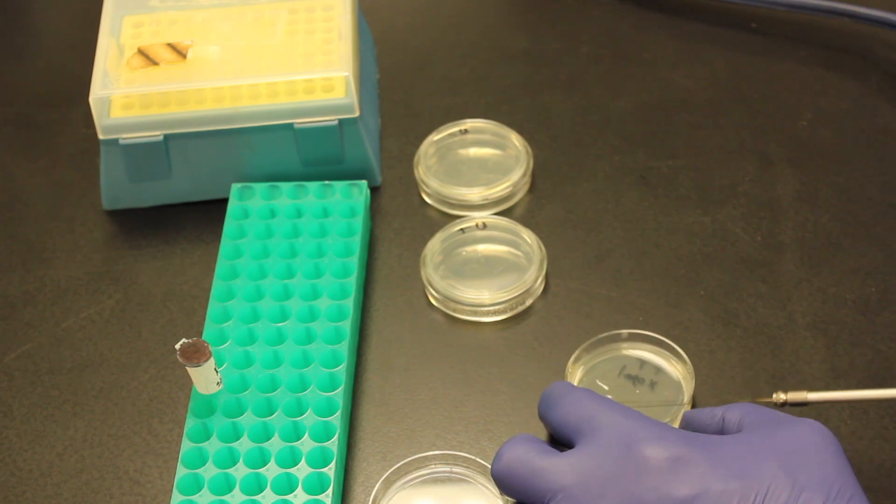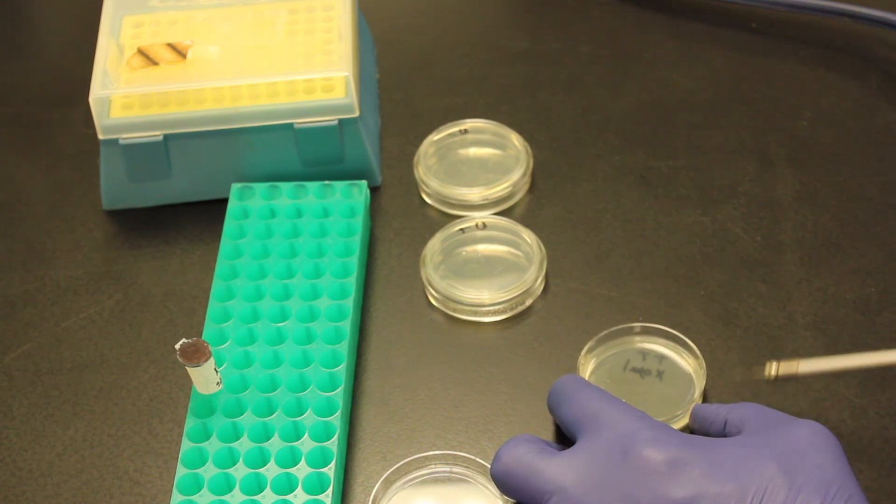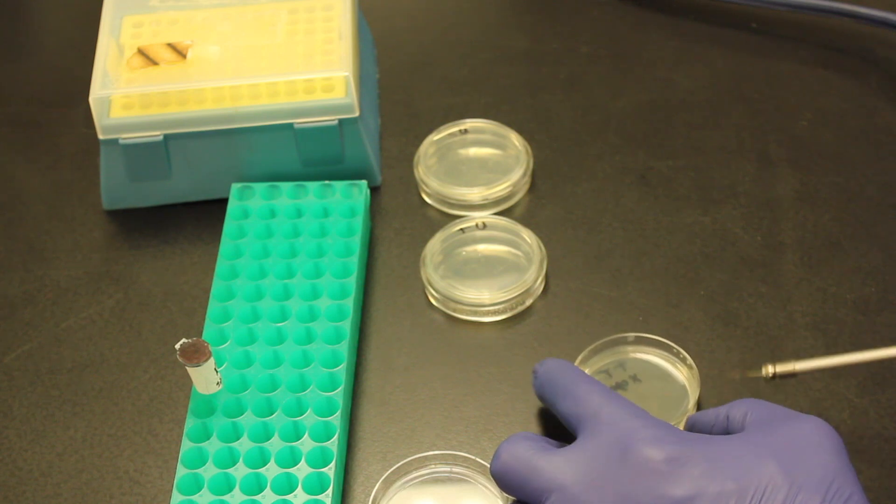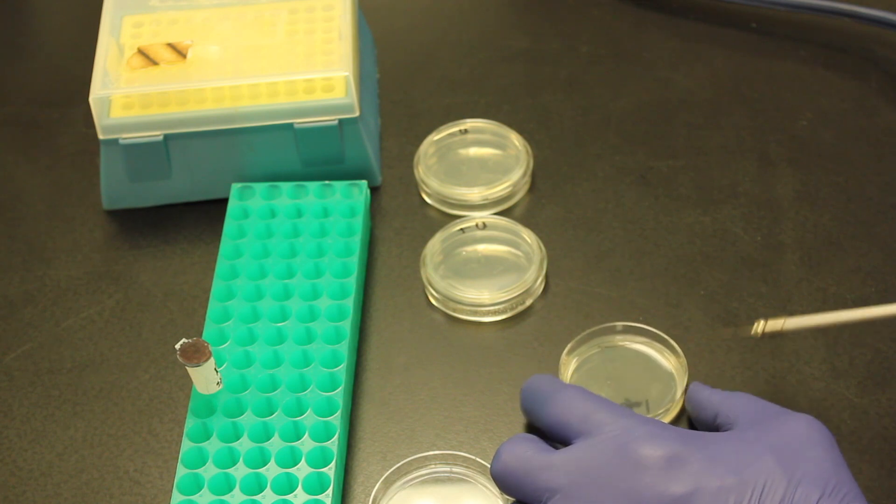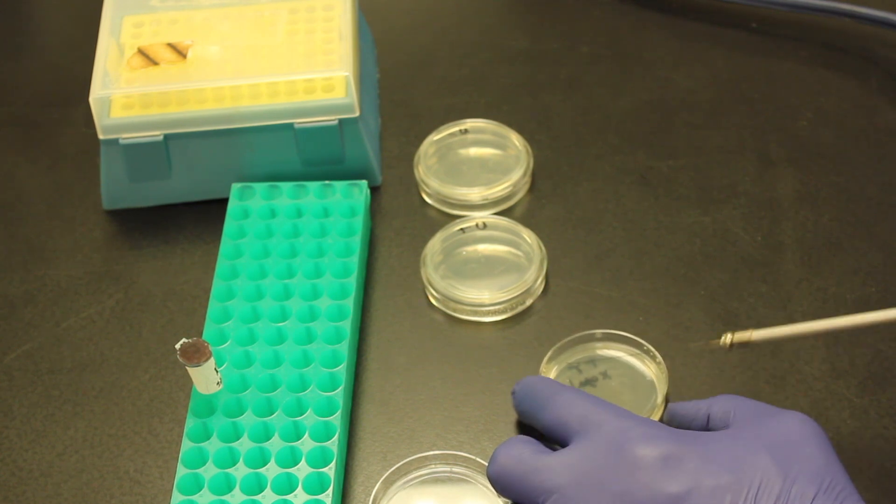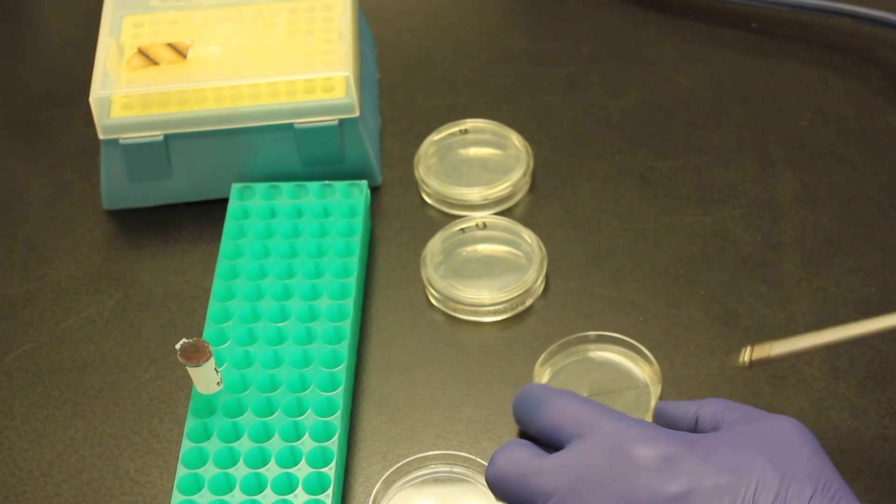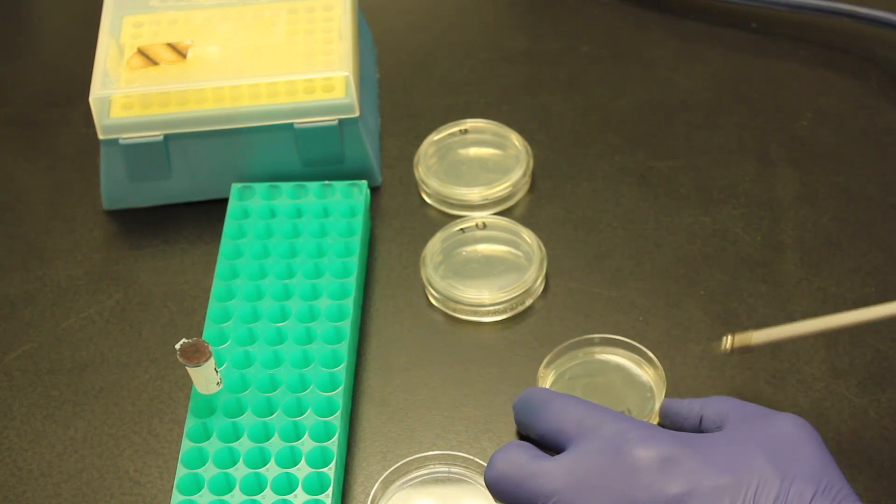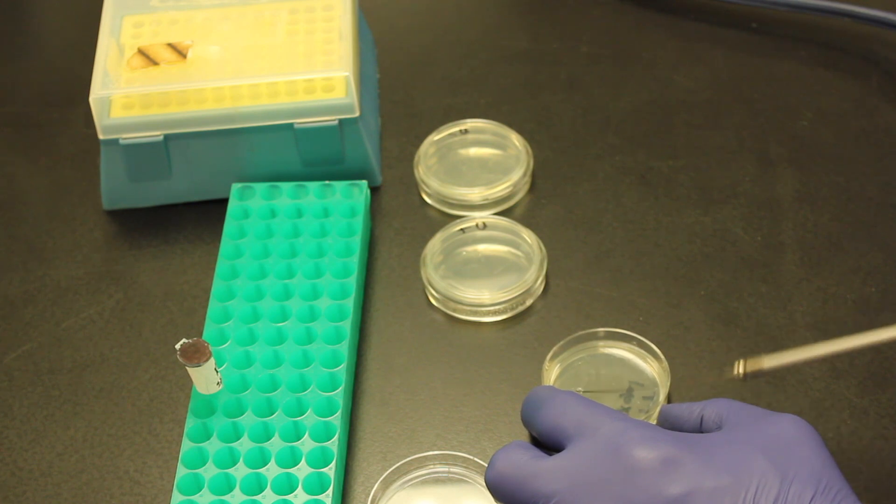We'll make it all the way throughout the whole plate. So I want to make sure that we have plenty everywhere throughout the whole plate. Now you can use a lot of things. We're using the loops in this case, but there are spreaders that work well. And I'm just going to make sure that we get X-Gal everywhere throughout this plate.